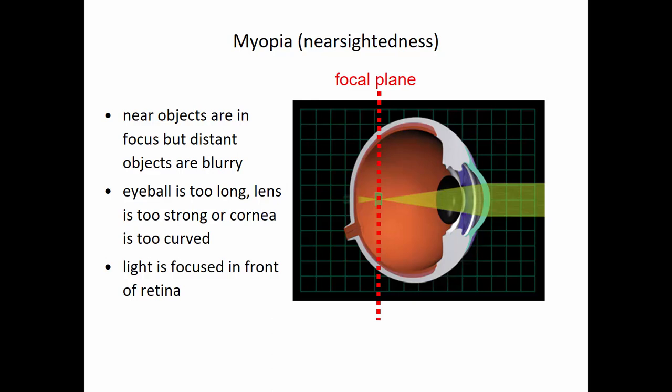If you have 20-20 vision and you are staring out as far as you can with your lens totally relaxed, the light should be bent such that it comes to a focal point right on your retina. If you look at distant objects and they are blurry, it means you can't bring that light to a focal point right at the retina. That is called myopia, or nearsightedness — you can focus objects when they are near, but you can't have distant objects in focus. The light is being bent too quickly, so it comes to a focal point before it actually hits the retina.